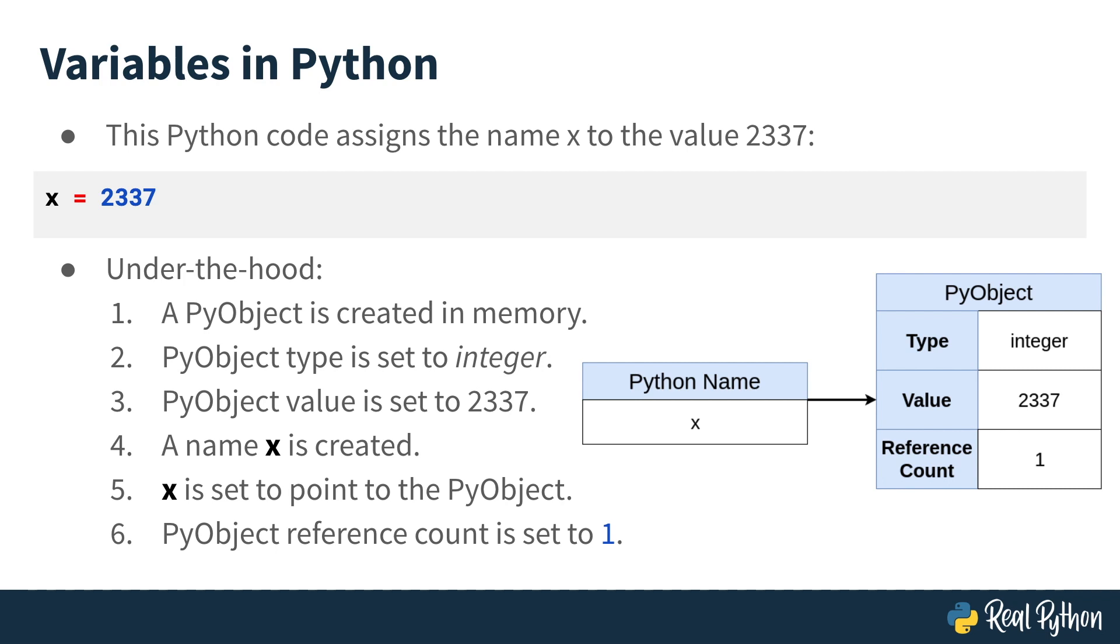First, the CPython interpreter, which is the standard interpreter written in C, will create what's called a PyObject in memory. The PyObject is like a container for keys and values, a little bit like a dictionary in Python.